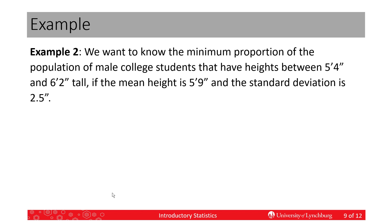So, let's do an example. I've got this misnumbered. Sorry. This is example one for this lecture video. We want to know the minimum portion of the population of male college students that have heights between 5'4" and 6'2". Now, this is a population, and we're going to assume that it's the same as the population for all adult males, 5'9", and the standard deviation is 2.5 inches. So, we're saying it's for the population, and this is the mean, and this is a standard deviation for the population.